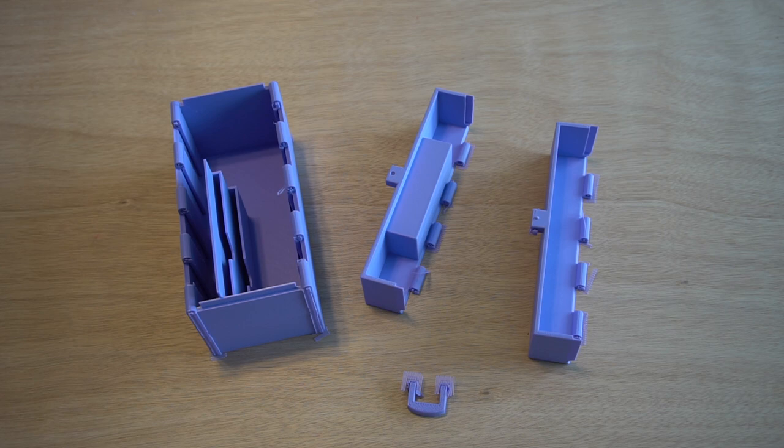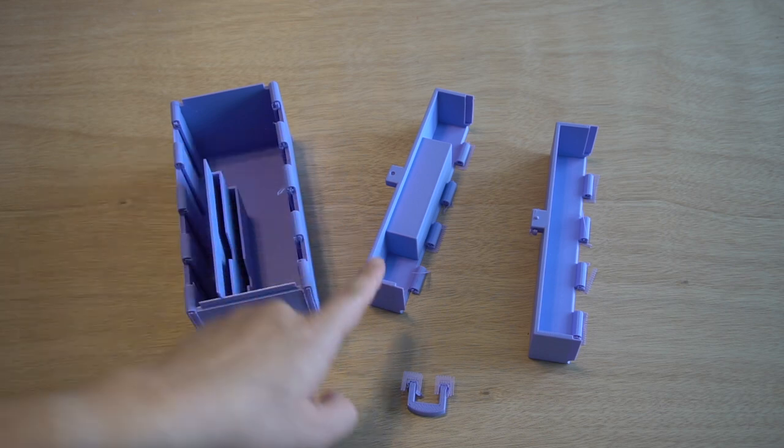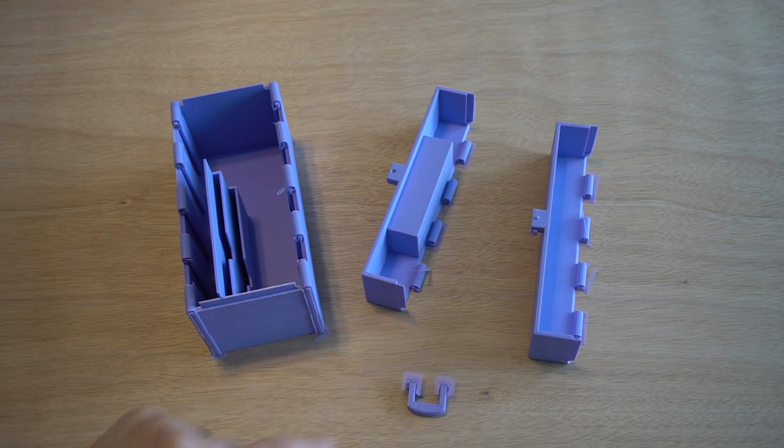Print all four STL files. This includes the main body, two lids, and a latch. Be sure to include auto-generated supports if using an FDM printer.